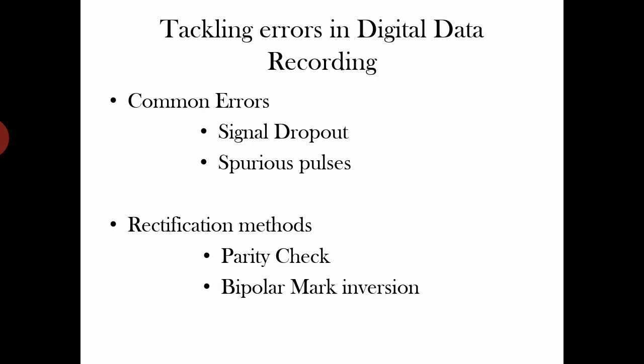The common types of errors that occur in digital data recording are signal dropout and spurious pulses. In signal dropout, some signal will be missed from the sequence. Maybe one or two bits might be missed. In spurious pulses, some unwanted bits might be added into the sequence. In order to rectify these errors, the commonly used methods are parity check and bipolar mark inversion.